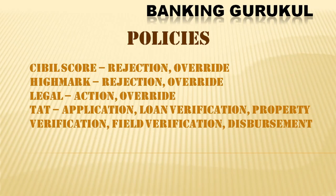Second is HighMark — what score you want to approve, what stage you want to reject, and where you want to override. These things you have to mention in policies. Same for legal: after legal verification of your documents, what is the action — approve, reject, or override.